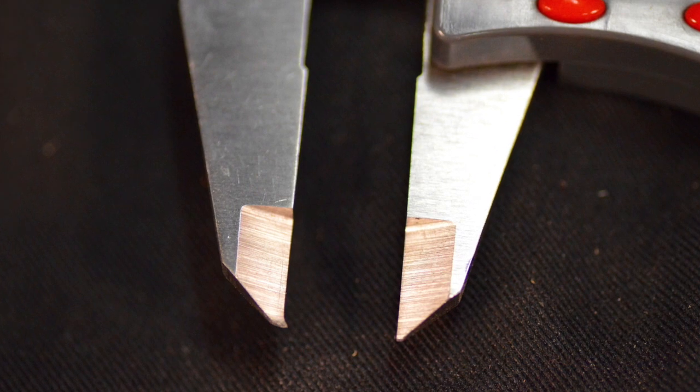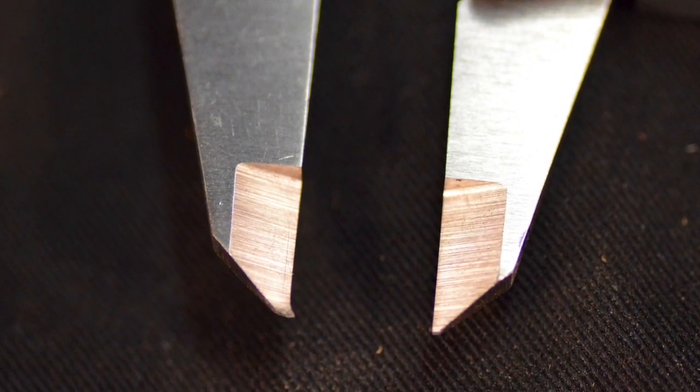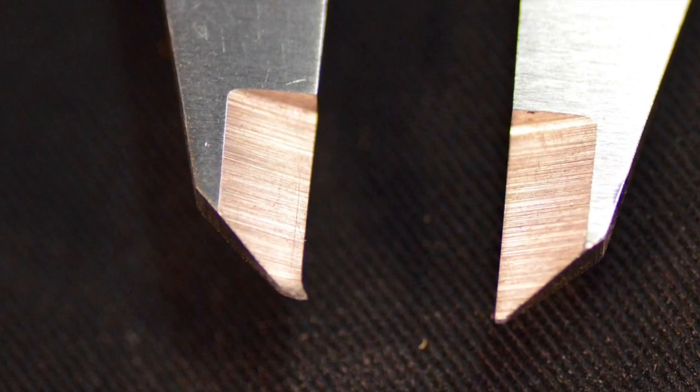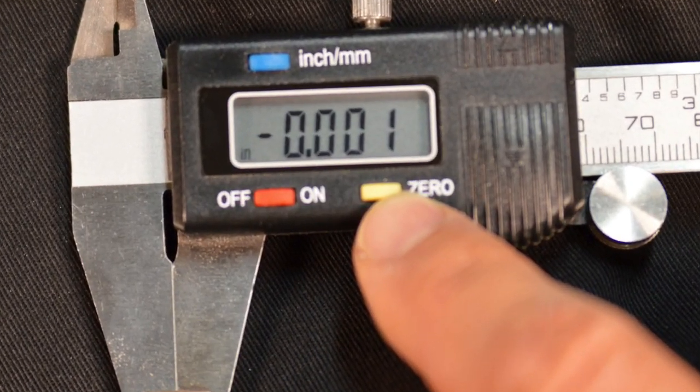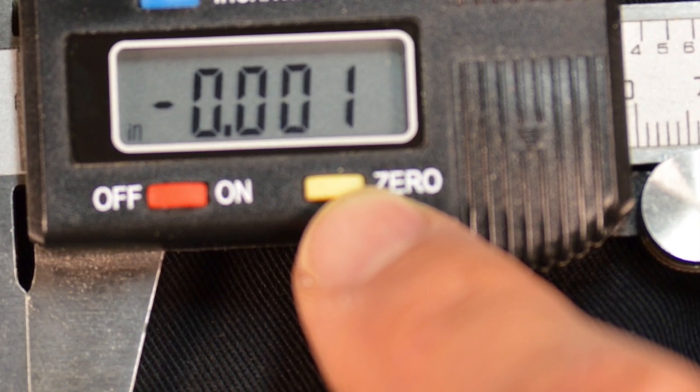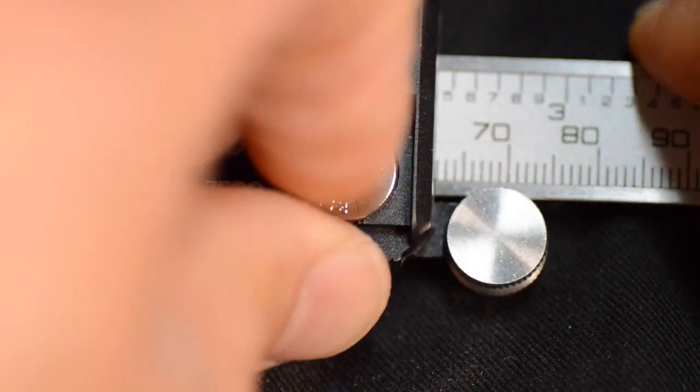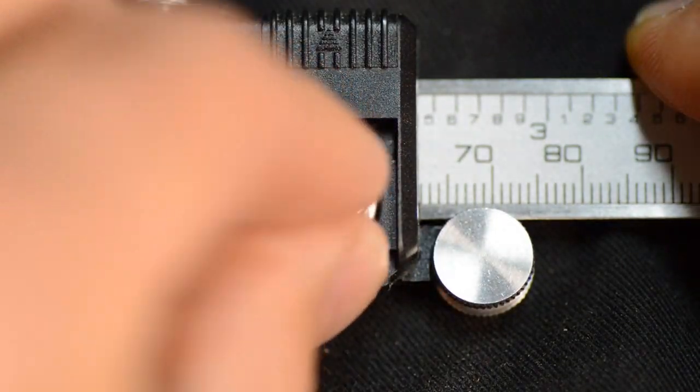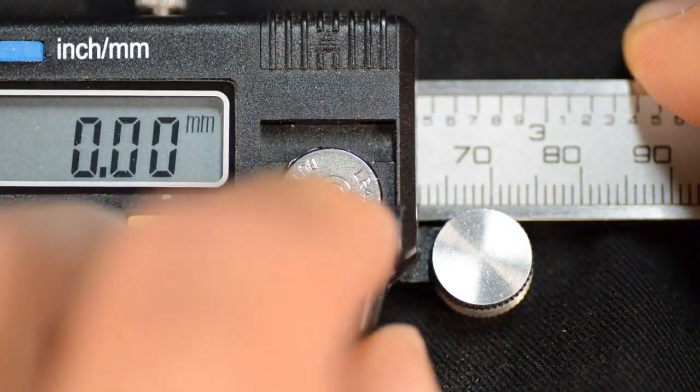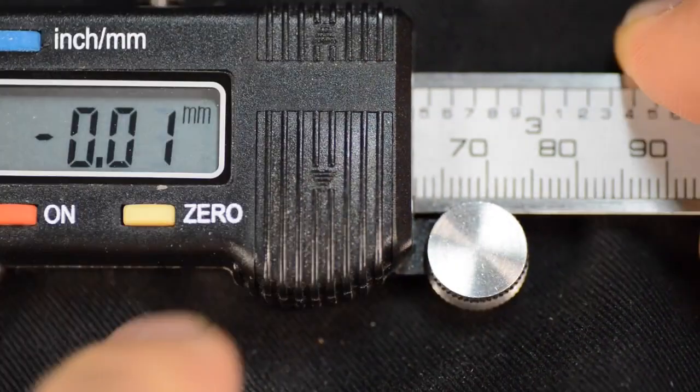Always check calipers before making measurements to ensure the jaws are not damaged and the reading is zero when they are closed. Use the zero button to reset the caliper if it is not reading correctly. Batteries will need to be replaced when the display gets weak. Slide the cover off the LCD to access most batteries.